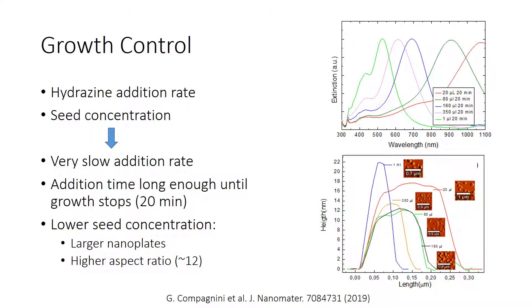The plasmon resonance position of silver nanoplates can be controlled by controlling hydrazine addition rate or controlling the concentration of spherical nanoparticles obtained after the first step of the process, which are the seeds. In our case, we use a very slow addition rate and an addition time long enough to allow the process to completion.